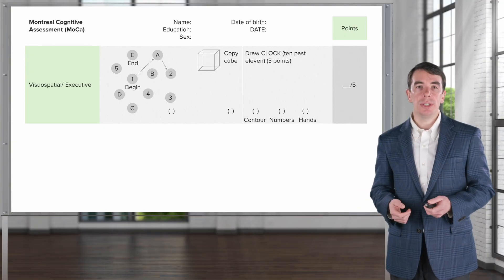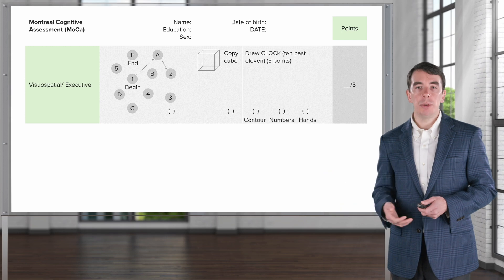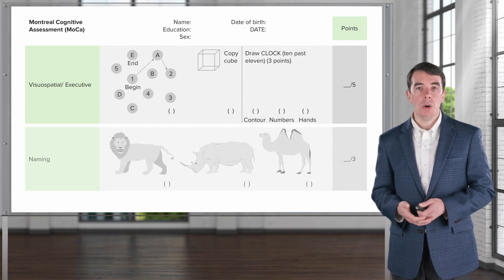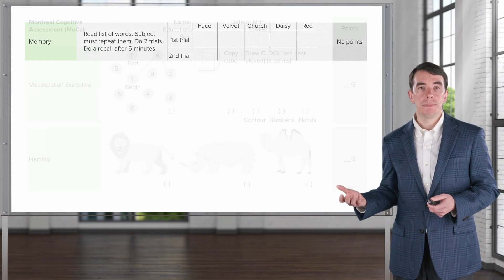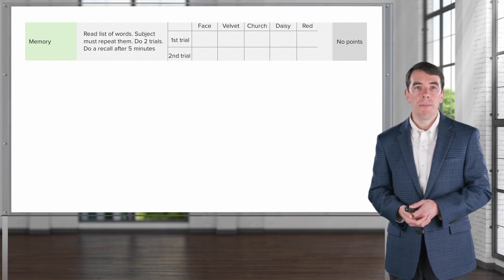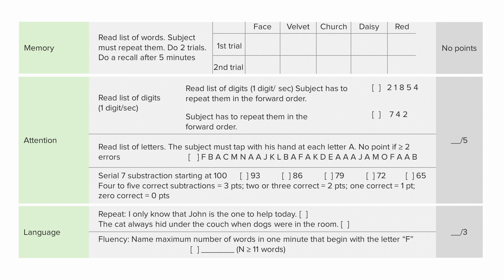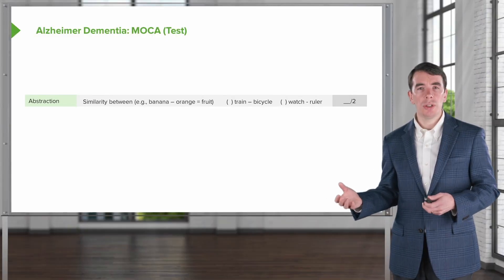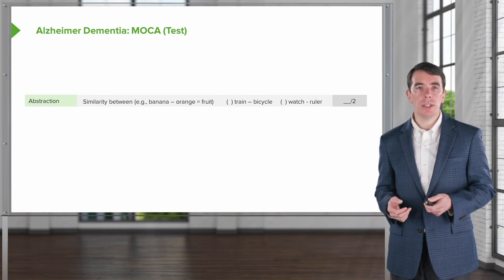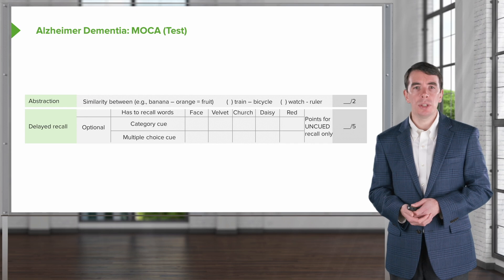The domains tested on the MOCA include visuospatial and executive function, naming, memory function — both immediate and long-term recall — attention and concentration with serial sevens as well as repeated word lists, language function, abstraction, delayed recall at five minutes, and orientation.